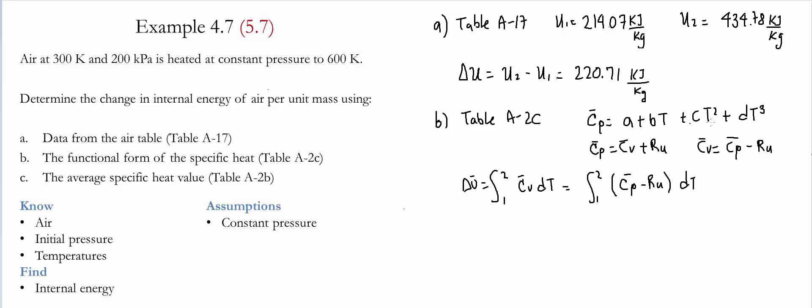And if we take the integral of this polynomial, we find that the value of U bar is At plus Bt squared divided by 2 plus CT cubed divided by 3 plus Dt to the fourth divided by 4 minus RUt. And this is evaluated from T1 to T2.